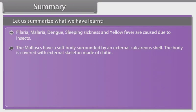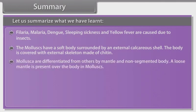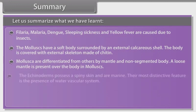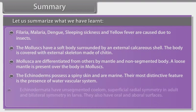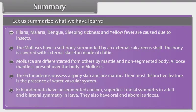The mollusks have a soft body surrounded by an external calcareous shell, and their body is covered with an external skeleton made of chitin. Mollusca are differentiated from others by the mantle and non-segmented body; a loose mantle is present over the body. The echinoderms possess spiny skin and are marine; their most distinctive feature is the presence of the water vascular system. Echinodermata have unsegmented bodies, superficial radial symmetry in adults and bilateral symmetry in larvae, and also have oral and aboral surfaces.